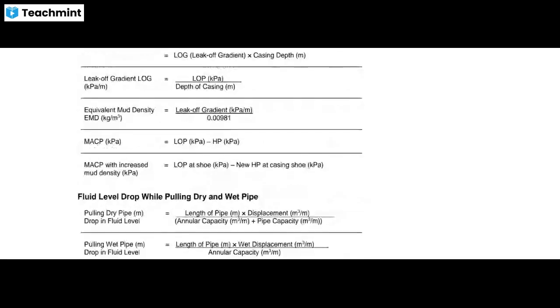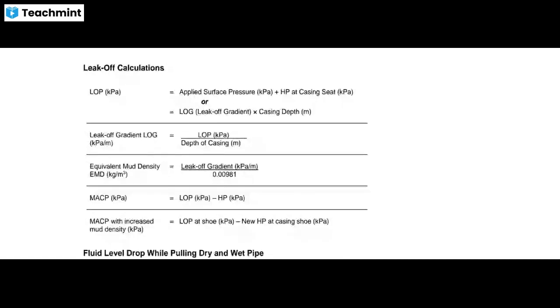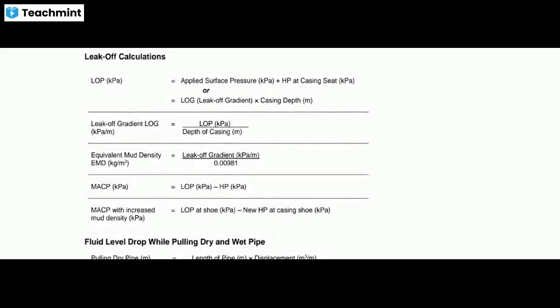For leak-off calculations: leak-off pressure equals applied surface pressure plus hydrostatic pressure at casing seat, which equals LOT pressure times casing depth. Leak-off gradient equals LOP divided by depth of casing. Equivalent mud density equals leak-off gradient divided by 0.0981. MACP equals LOP minus HP in kilopascals, and MACP with increased mud density equals LOP at shoe minus new HP at casing shoe.